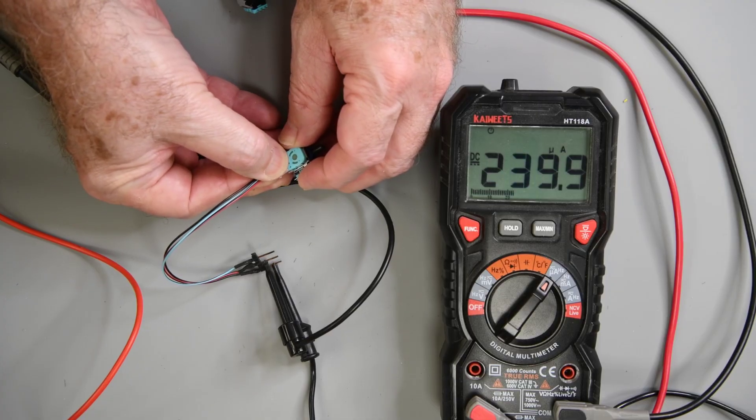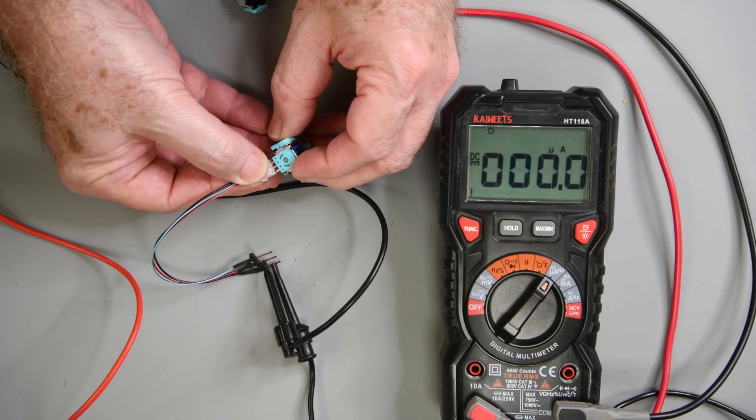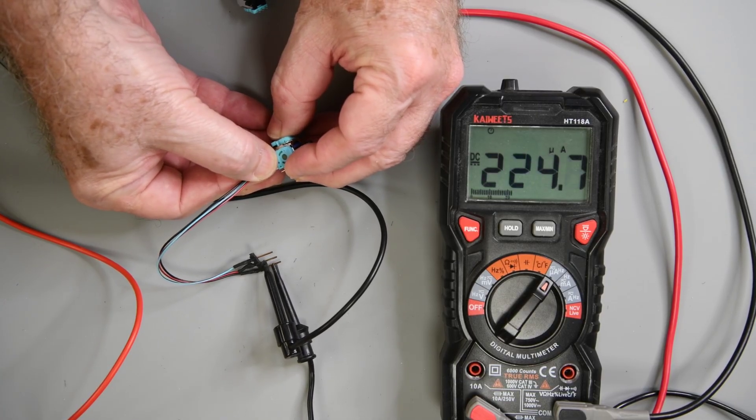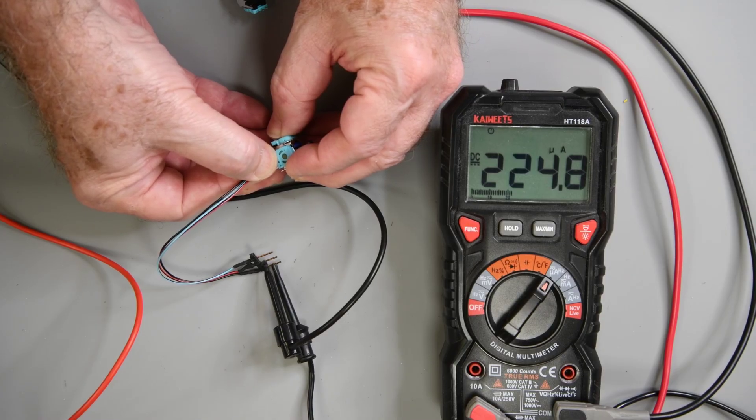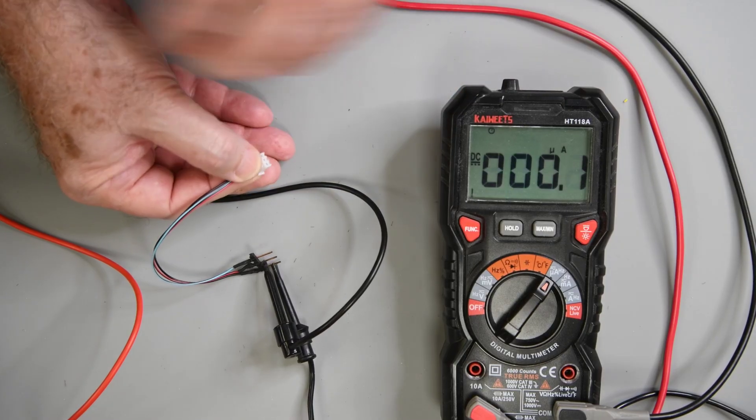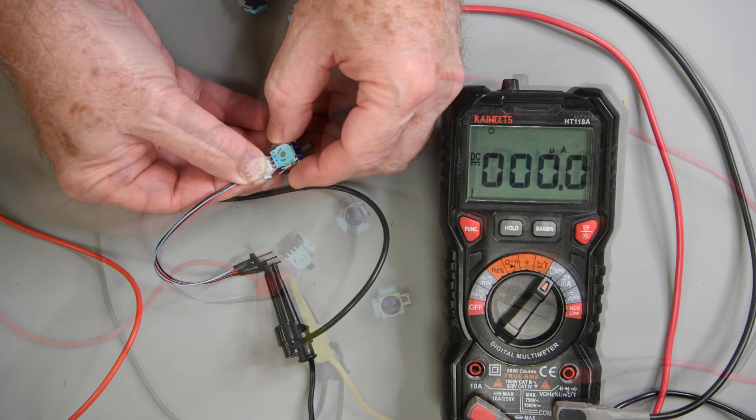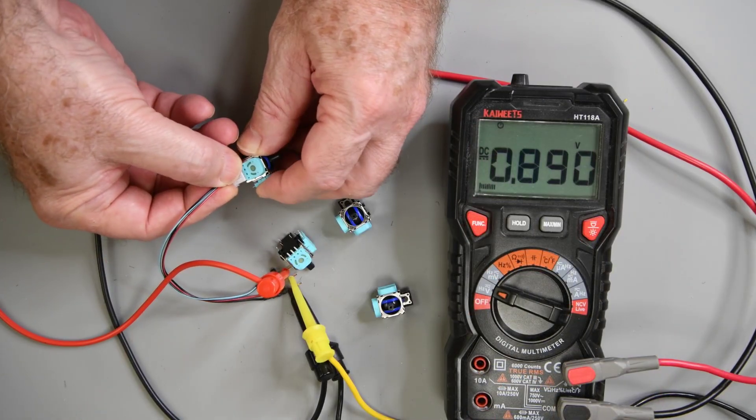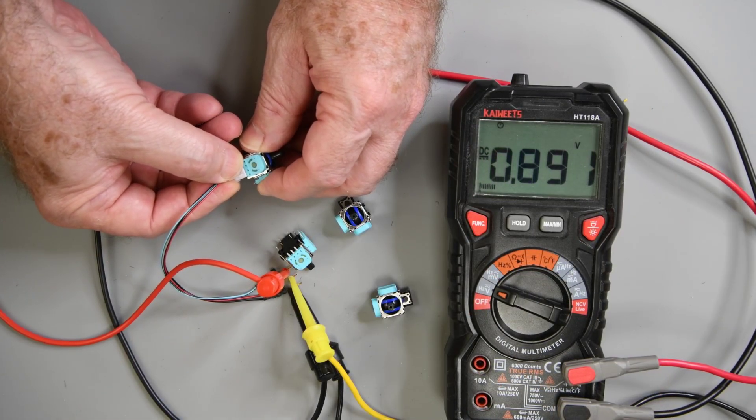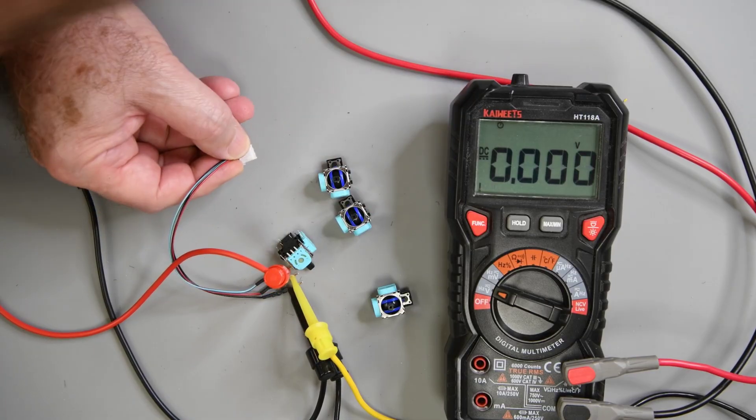Current draw for the sensors is around 230 to 240 microamps. All the TMR sensors I've tested have been right around this range. Less than a third of the power consumption of a potentiometer based joystick.